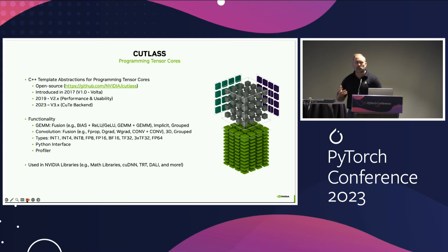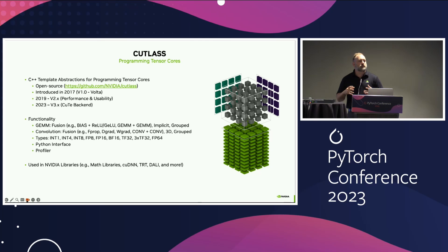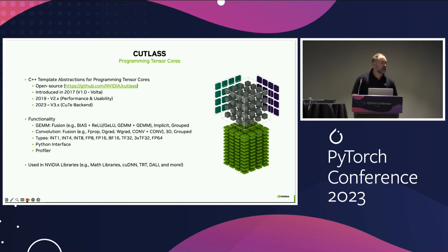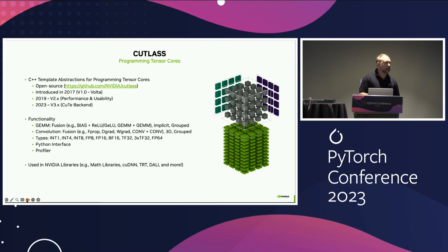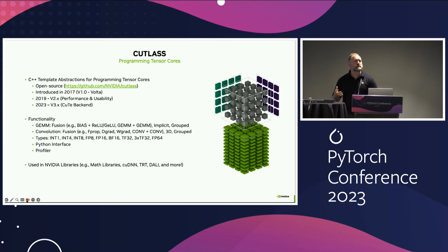Cutlass consists of building blocks that allow you to — whether you need to use a GEMM, a convolution, off-the-shelf, or if you want to design a kernel specifically for your use case. We support numerous epilogues and all of the data compute types that you'll find on NVIDIA GPUs. We recently released a Python interface, and we also have a profiler which you can use to find the best configuration for your use case.